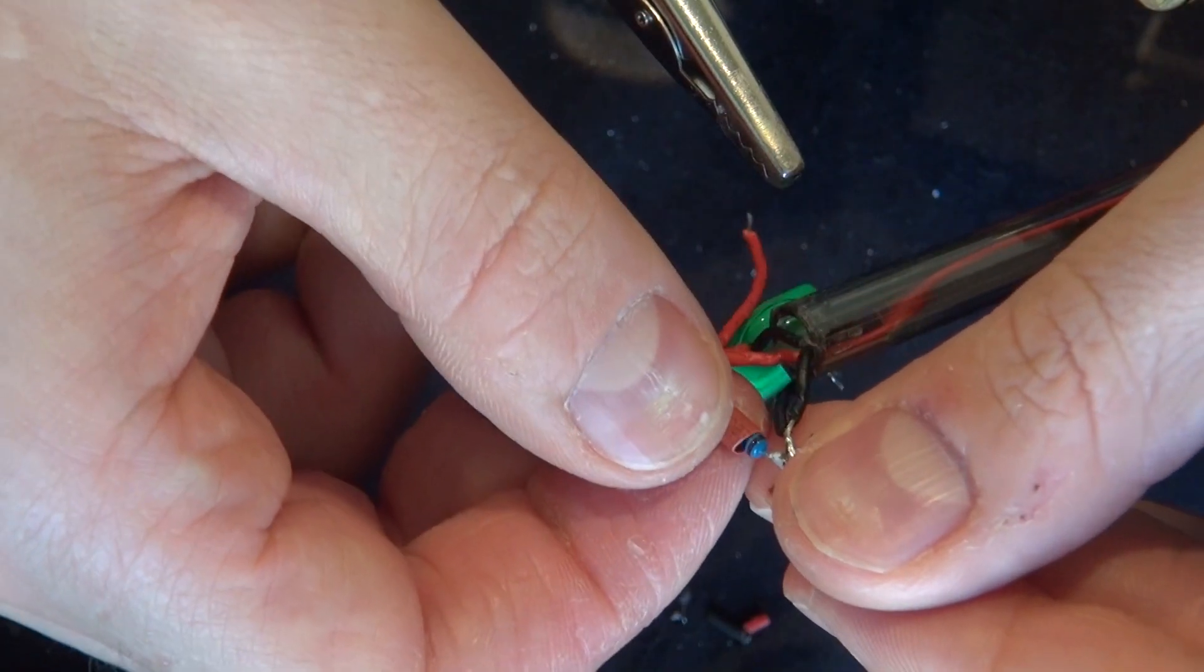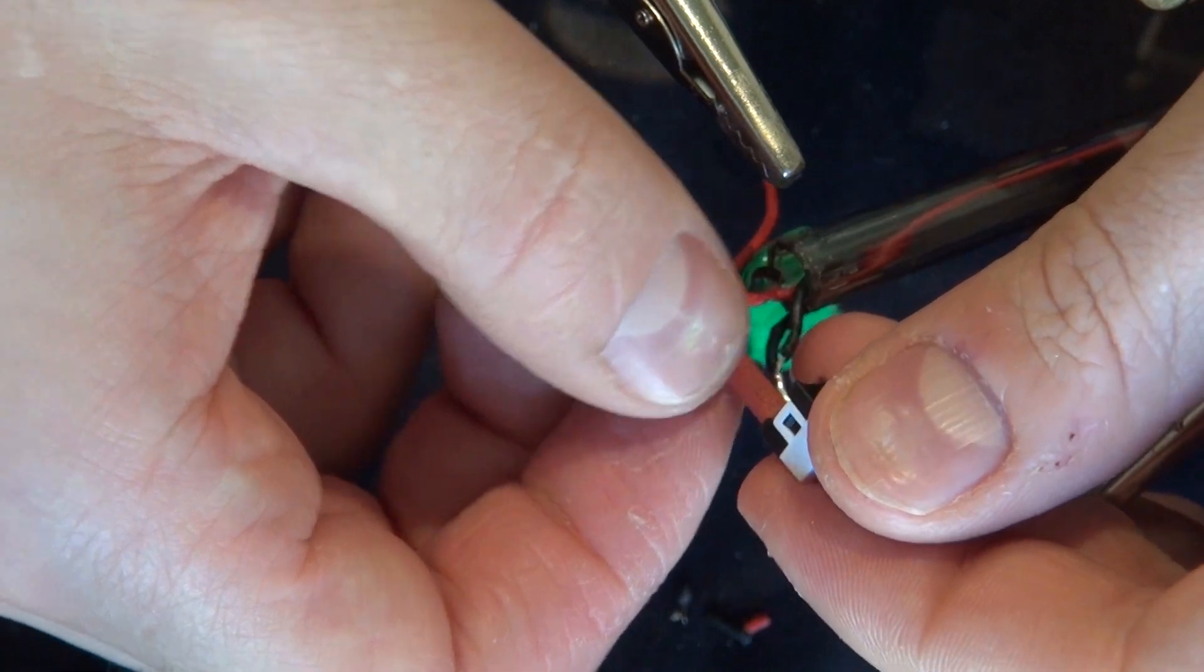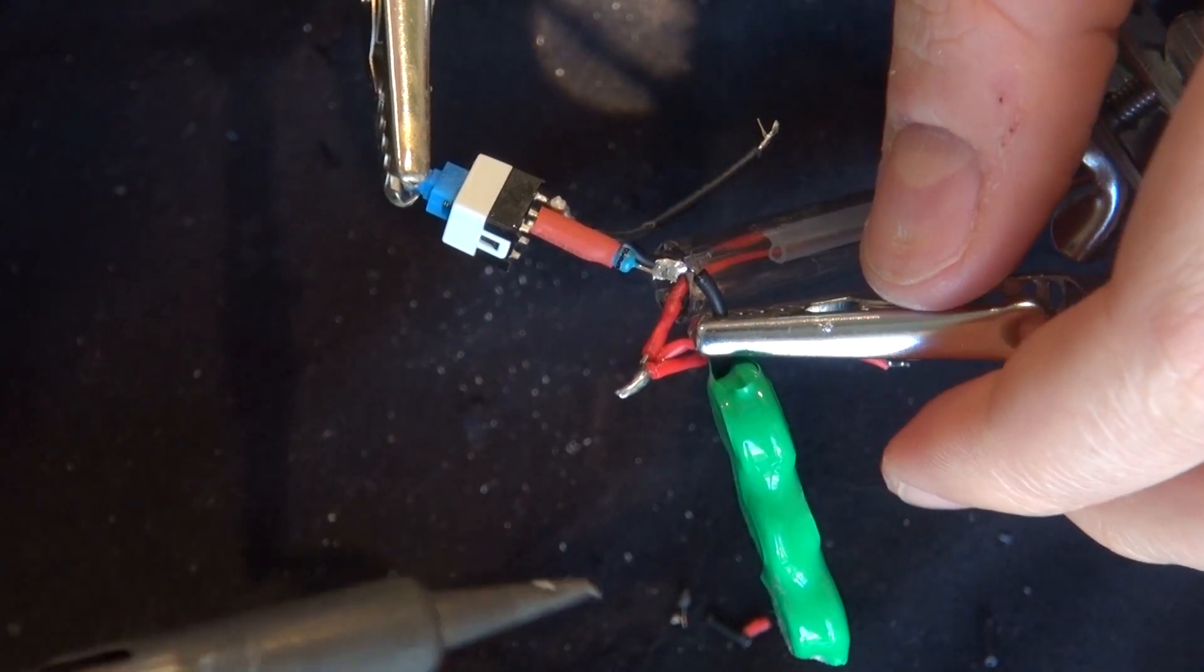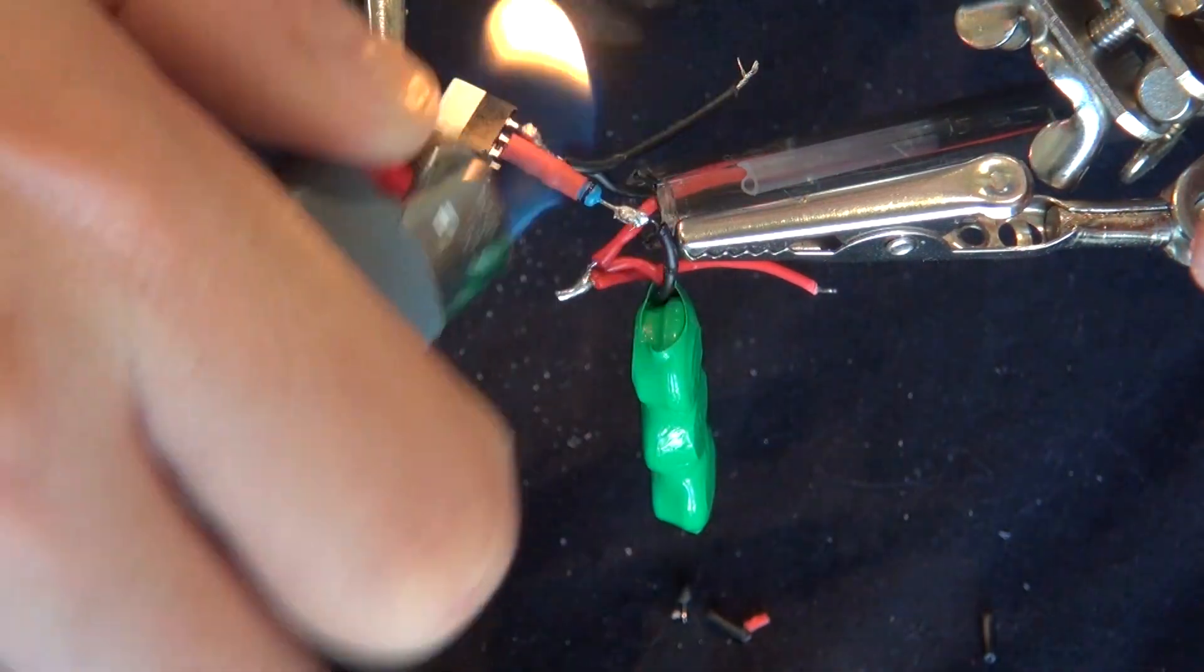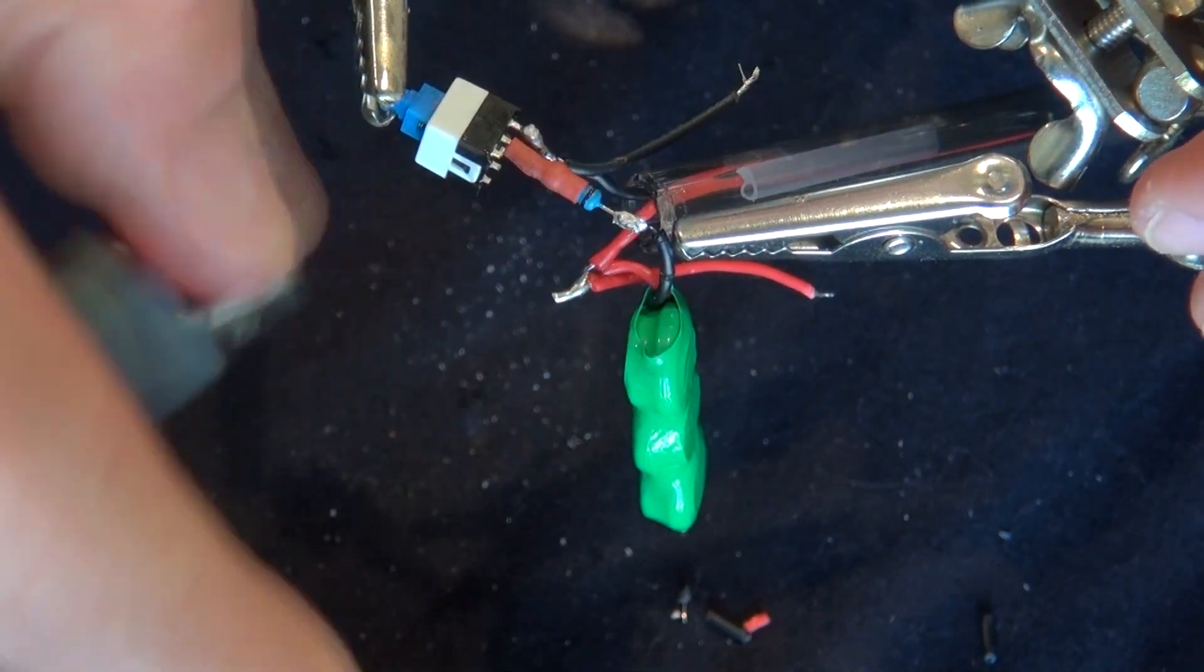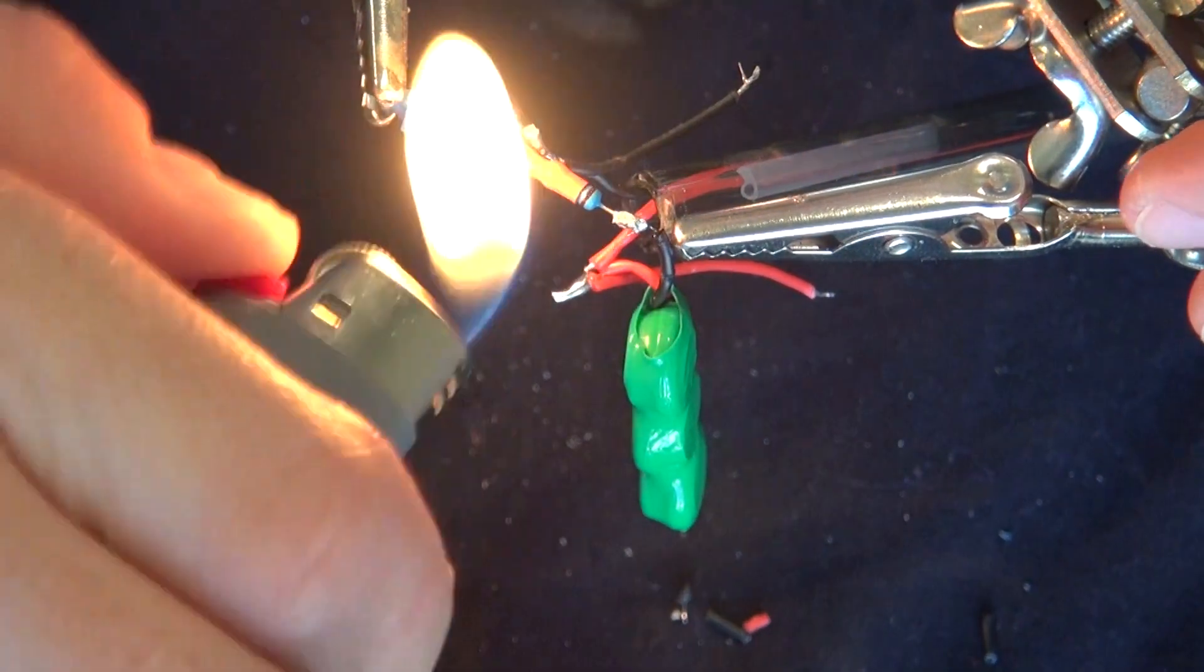Put a shrink tube on it to keep the insulation to prevent any shortage. Now solder the negative wire from your resistor to the negative wire of your battery. Shrink the tube.